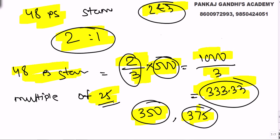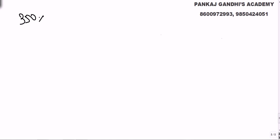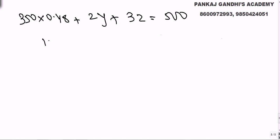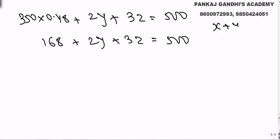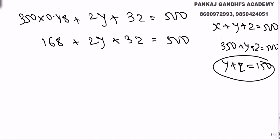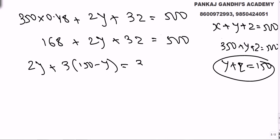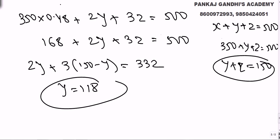Trying x = 350 stamps of 0.48: 168 + 2y + 3z = 500. With x = 350 we know y + z = 150. So 2y + 3(150 − y) = 332.